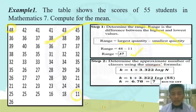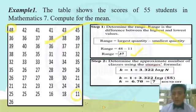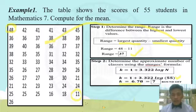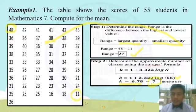Step 2: determine the approximate number of classes using the Sturges formula. K equals 1 plus 3.322 times log n, where n, the total number of data, is 55. So, 1 plus 3.322 times log 55. Using a calculator, K equals 6.78. We round up 6.78 to 7. So 7 is the value of our K, which is the number of classes.